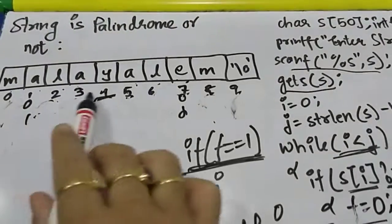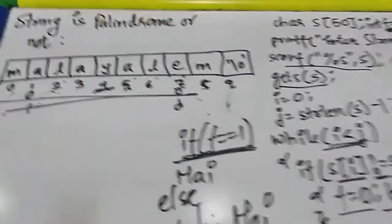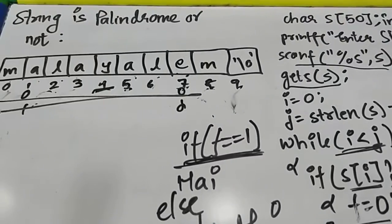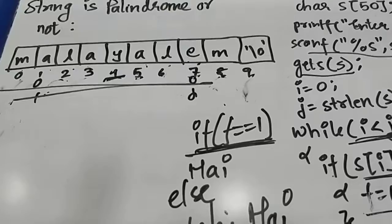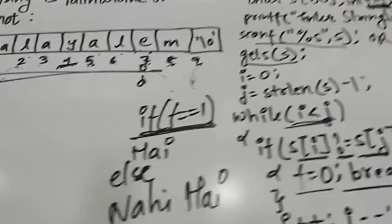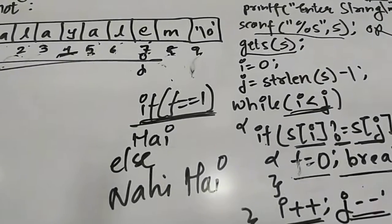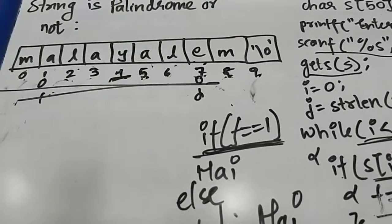So you see, m-a-l-a-y-a-l-e-m is not a palindrome. So in this, what will we see? It is similar. See, if you see, it is similar to that reverse. There we were swapping every i and j, and here we are comparing every i and j. There also while loop condition was while i less than j, here also condition is while i less than j. Is that clear?